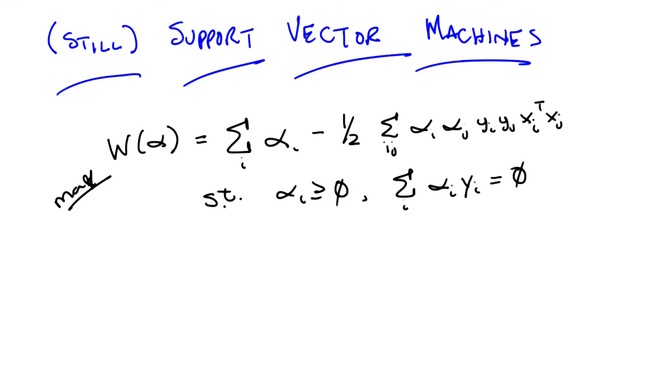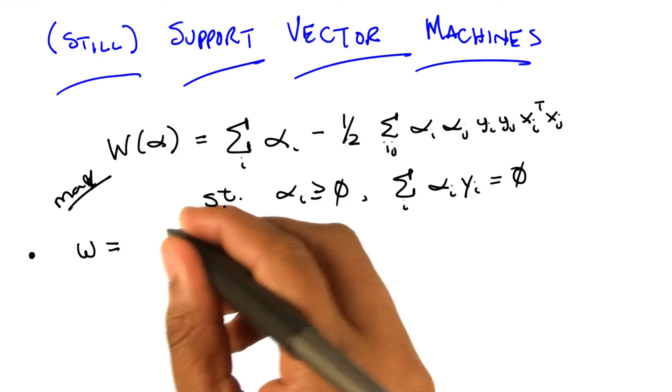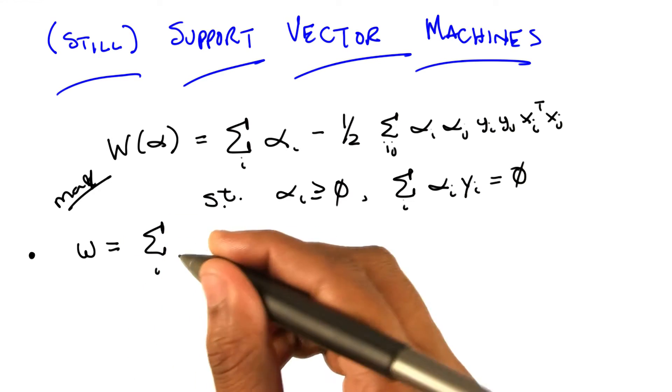So here's the first one. It turns out that once you find the alphas that maximize this equation, you can actually recover the w, which was the whole point of this exercise in the first place. That's the little w, not the big W.